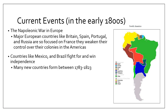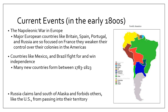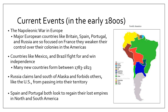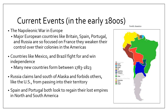Countries like Mexico and Brazil fought for and won their independence during this time, and many new countries were formed in South America between 1783 and 1823. Russia also claimed land in North America as far south as what we would think of today as Oregon, and forbade others like the US from entering their territory. Once the Napoleonic Wars started to end, Spain and Portugal looked to regain their lost empires in North and South America.